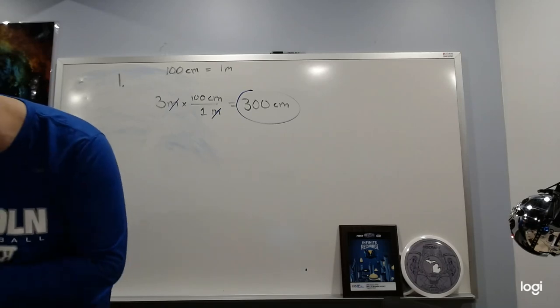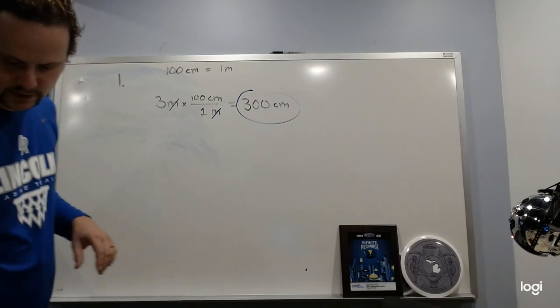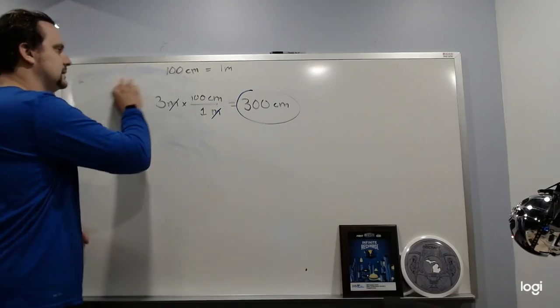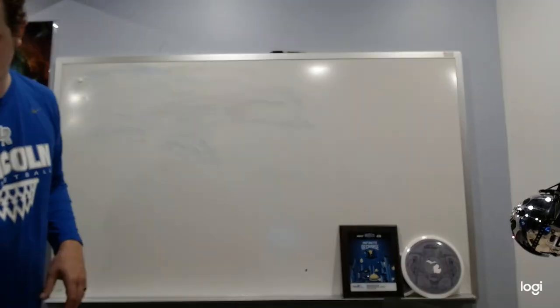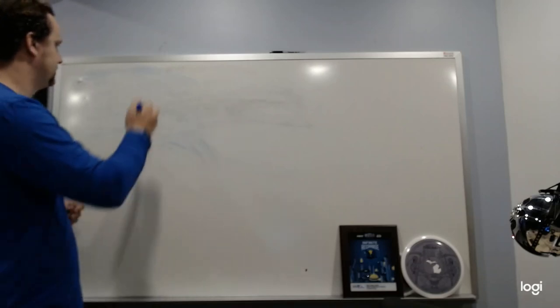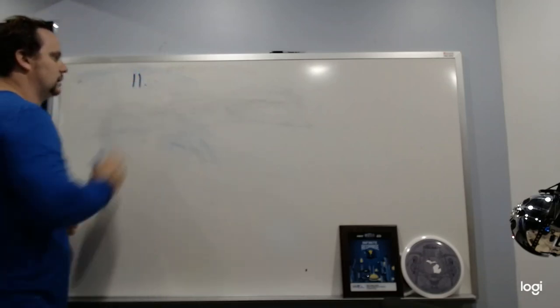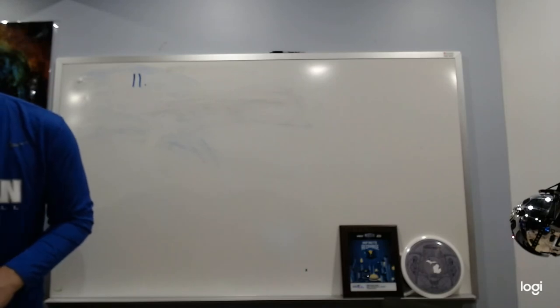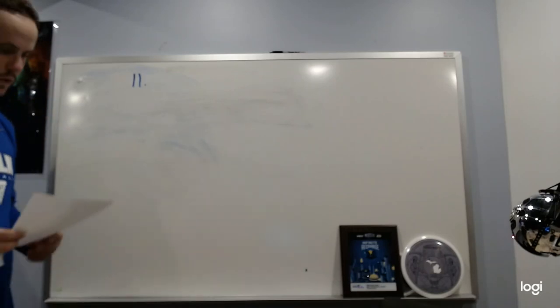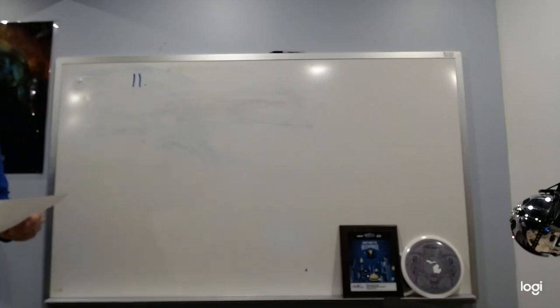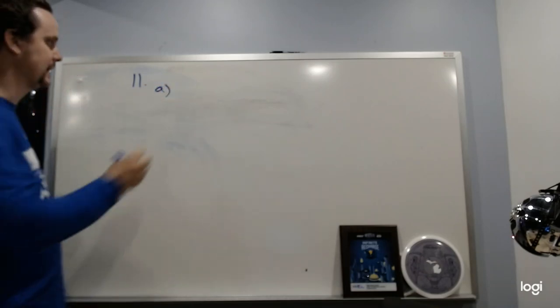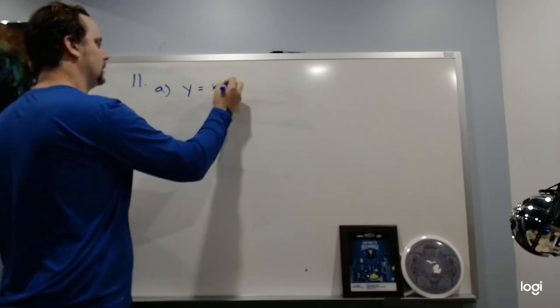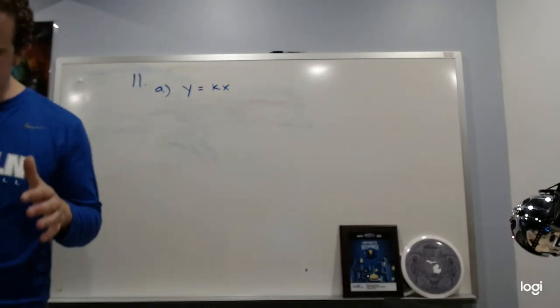We're going to go straight to number 11. Most of the ones on the front page are like this. Number 11: for each of the following mathematical relations, state what happens to the value of Y when the following changes are made. K is going to be a constant. So I start out with this function here: I've got Y equals KX. And it's telling me what happens if X is